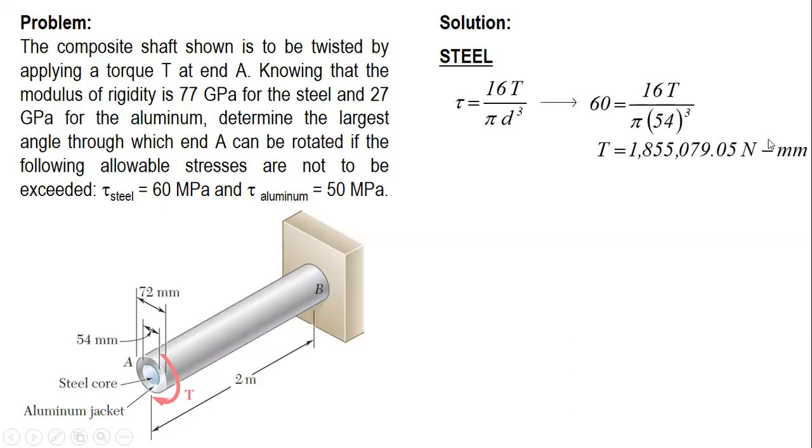Using this formula, θ = TL/(JG). Now, again, steel is a solid shaft, so the formula for polar moment of inertia is J = πD⁴/32.